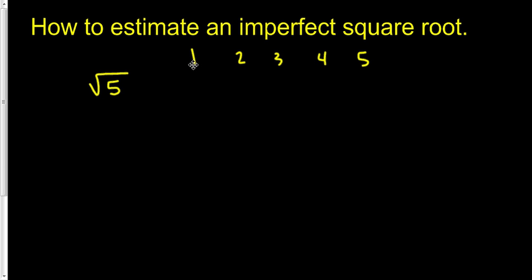Then you ask yourself, what's 1 times 1? 1 times 1 is 1, so the square root of 1 is 1. What's 2 times 2? It's 4, so the square root of 4 is 2. 3 times 3 is 9, and the pattern just continues. Square root of 9 is 3, square root of 16 is 4, and the square root of 25 is 5.